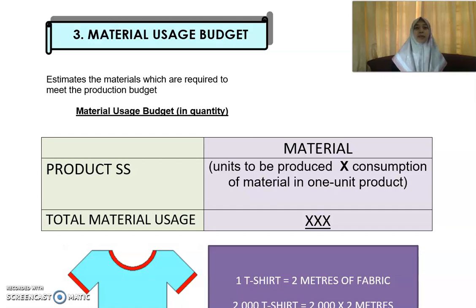Next I'm going to explain about the material usage budget. We are still under the functional budget. The first one I explained is the sales budget, the second one is the production budget, so the third one is the material usage budget.